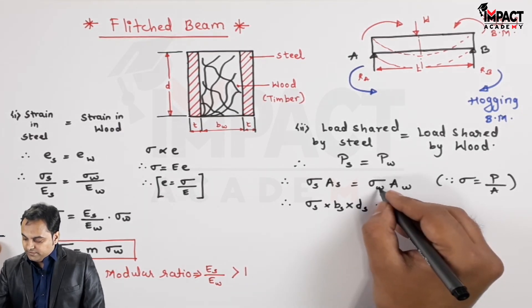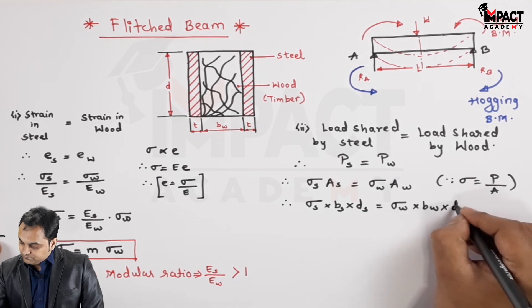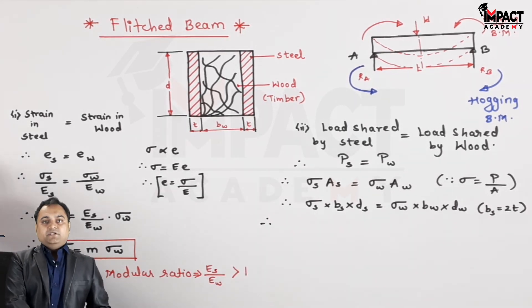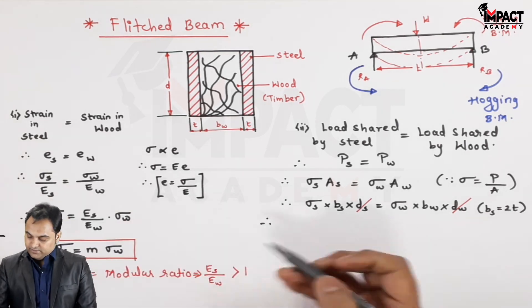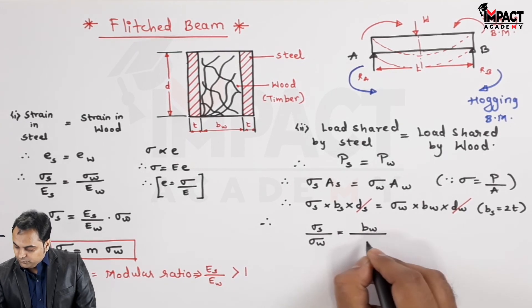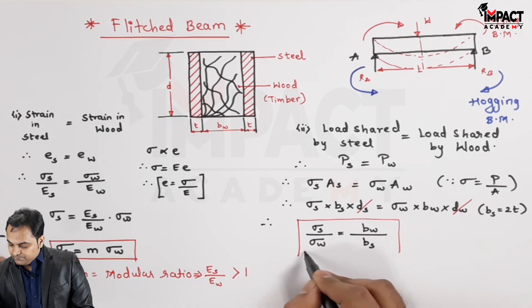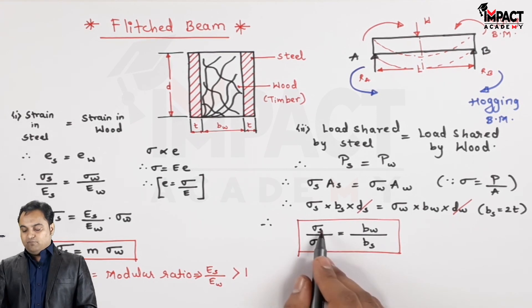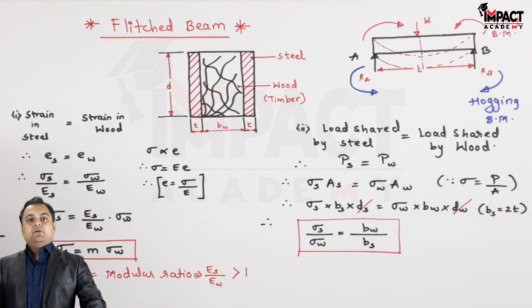And in case of wood, it would be b subscript w, that is the width of wood, into the depth of wood. Here I have taken b_s, the total width of s, twice of thickness. Now therefore, since the depth is same in steel and wood, so d would get cancelled out, and therefore sigma s upon sigma w is equal to b_w upon b_s. So that is another relation in case of flitched beams, that is, stress is also inversely proportional to width. An element or the material having less width will have more stress, whereas the material having greater width will have less stress. So these are the conclusions which we can draw from flitched beams.